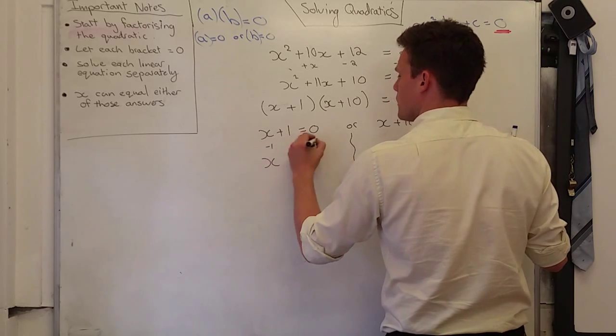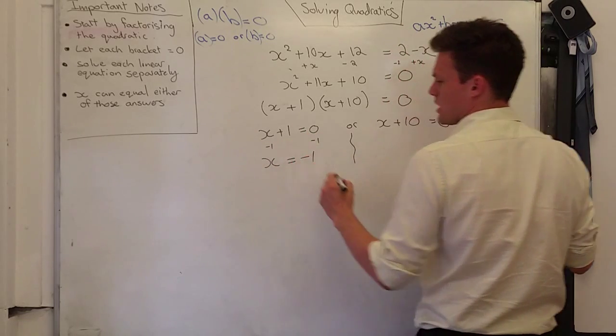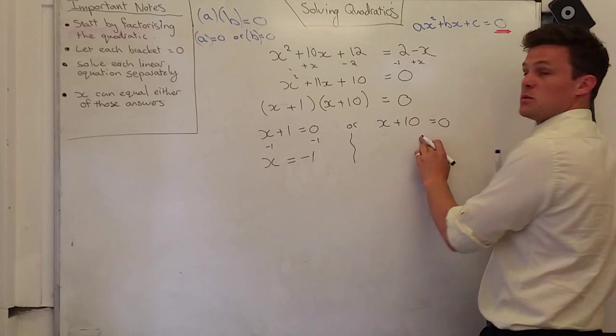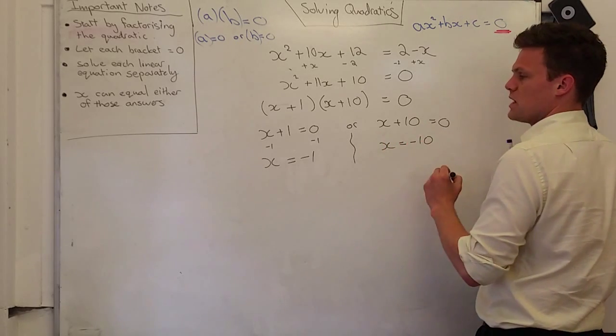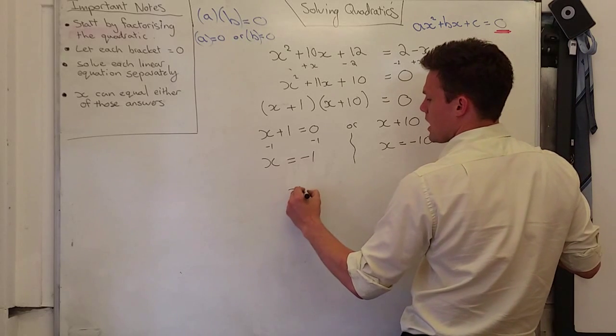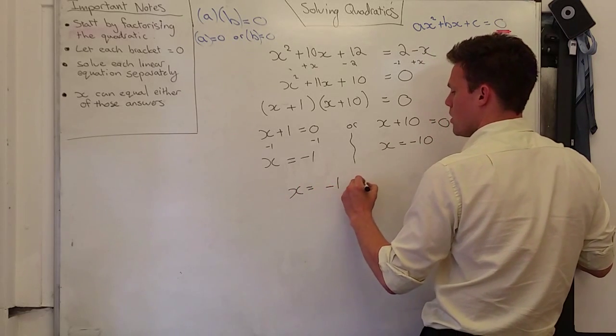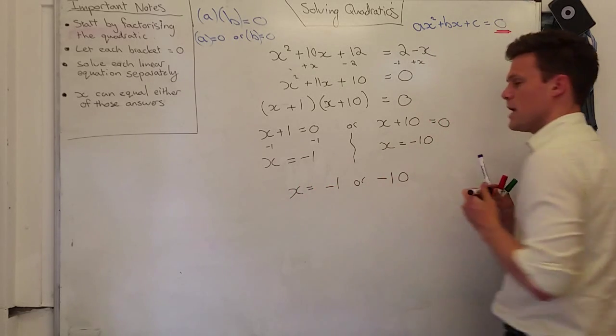And then I just solve these linear equations separately. So, now I'm going to subtract 1 from both sides, so x equals negative 1, or I subtract 10 from both sides, so x equals negative 10. So, then I can say that x equals negative 1, or negative 10.